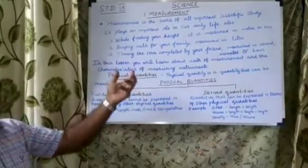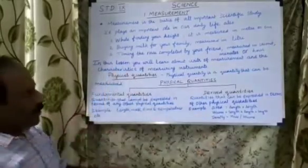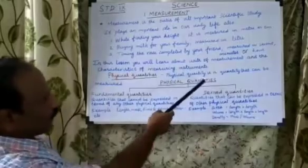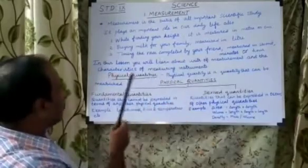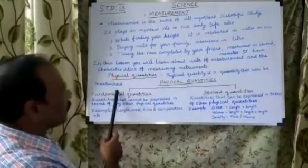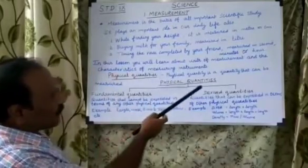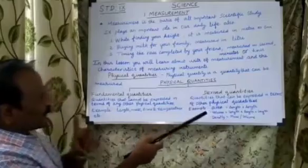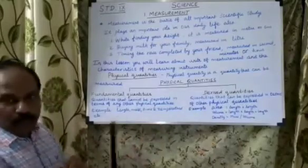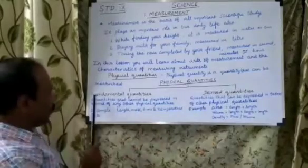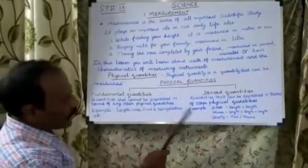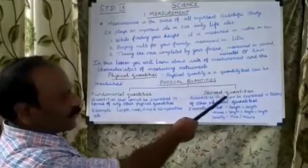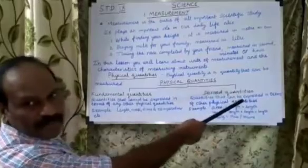What is physical quantities? A physical quantity is a quantity that can be measured. Physical quantities can be classified into two types: one is fundamental quantities and another one is derived quantities.